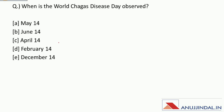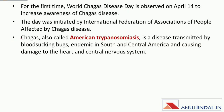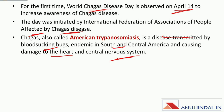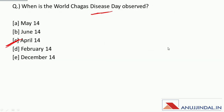When is World Chagas Disease Day observed? World Chagas Disease Day was first observed on April 14th, by the International Federation of Associations of People Affected by Chagas Disease. This was the first time it was observed, in 2020. Chagas disease is transmitted by blood-sucking bugs and damages the heart and central nervous system. It is endemic in South and Central America. The correct answer is 14th April.